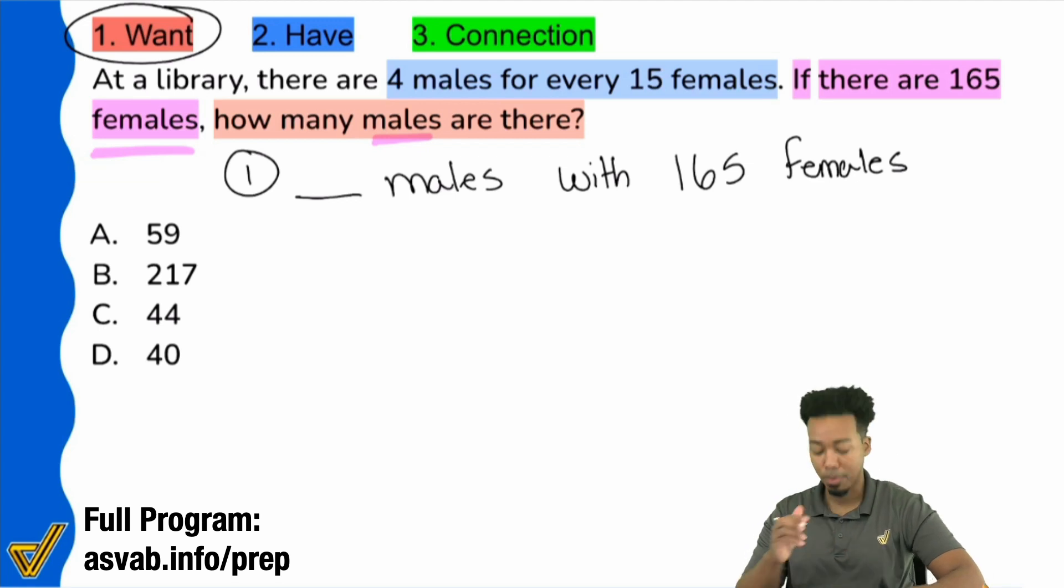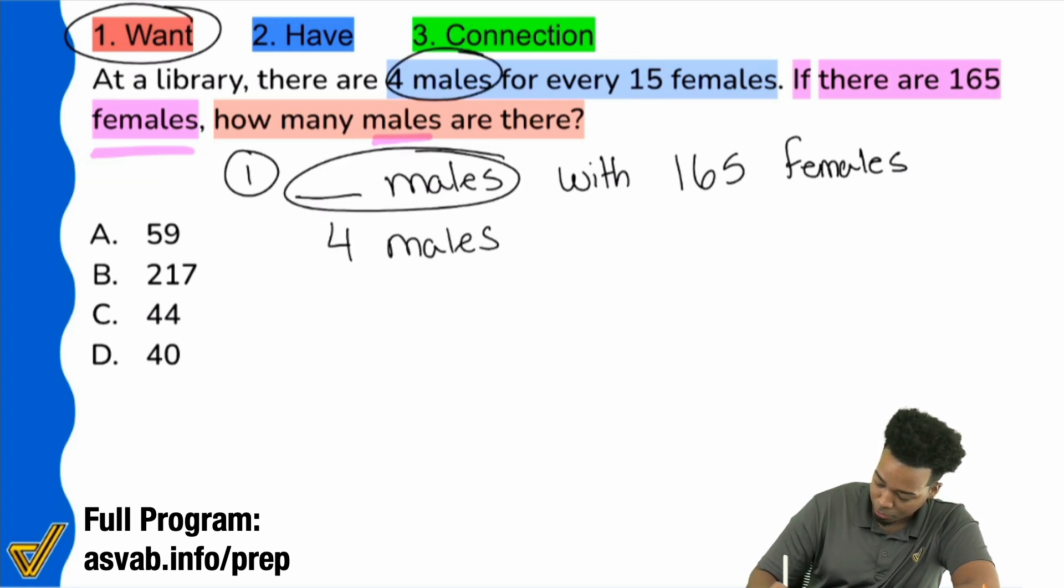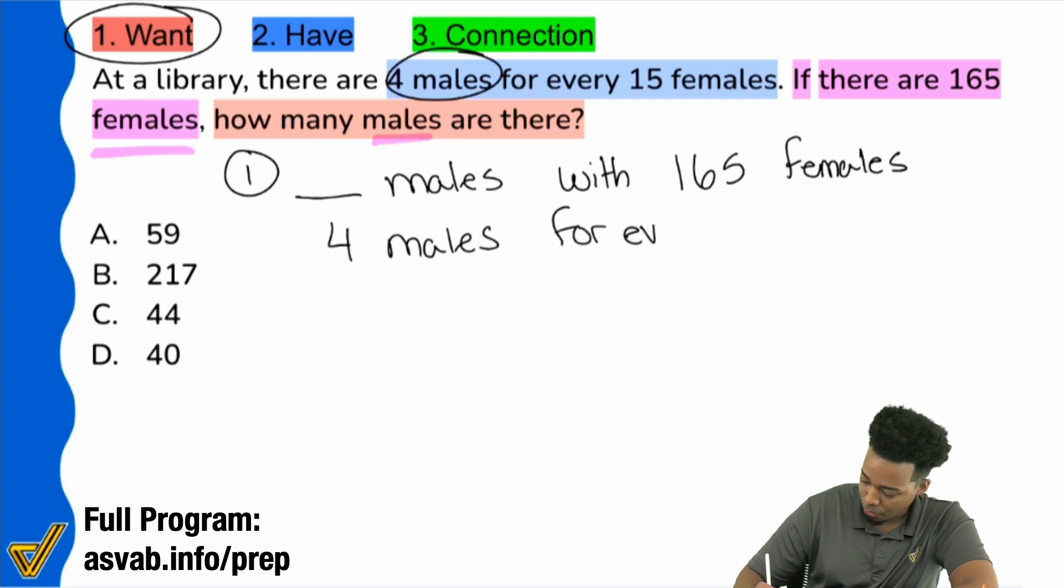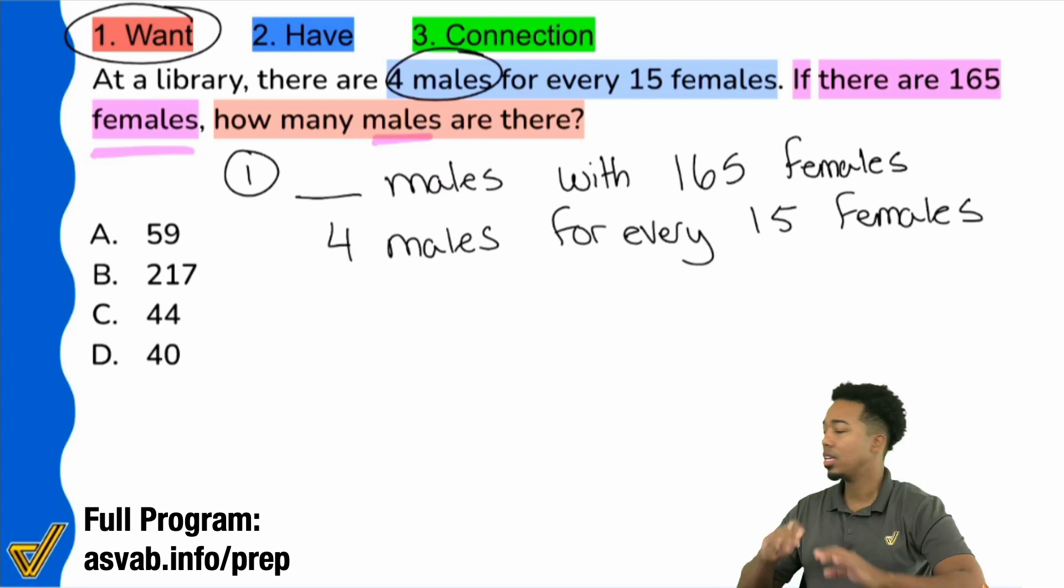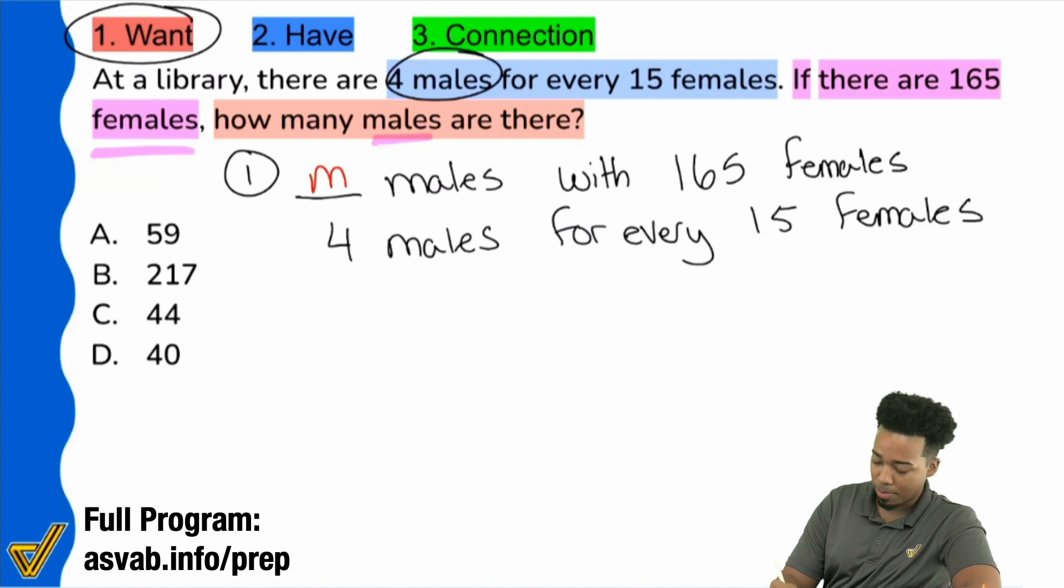And so with that, right over here, booyah, it says four males. So I'll write that right under males. I'm going to write males first because I have males first up here for every 15 females. So this is undoubtedly a proportion problem because again, you're comparing the same things, males and females in the same way. Males to females, males to females, not females to males and males to females, not backwards, the same exact way. Because once you have the same things compared in the same way, that's where the beauty happens. This is where you can set up your proportion, solve it, and you're good.